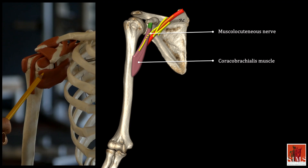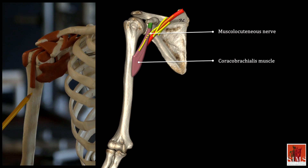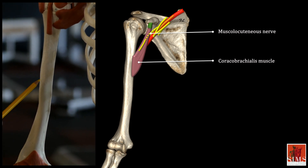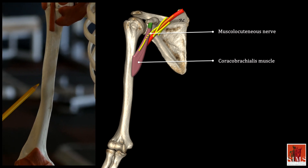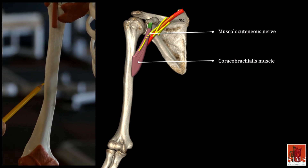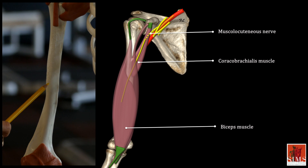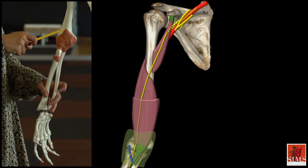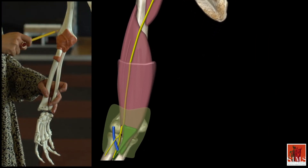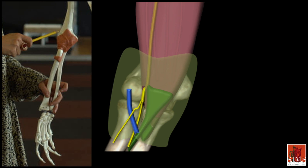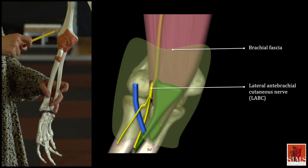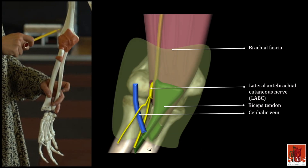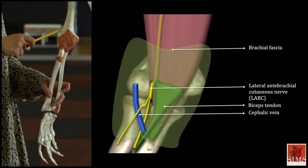It then enters the coracobrachial muscle before passing between the biceps brachii in front and the brachialis muscle behind. It is located in the subcutaneous layers between the biceps brachii tendon and the cephalic vein.